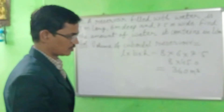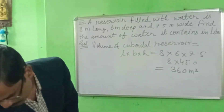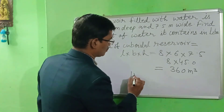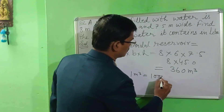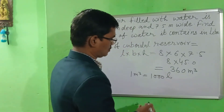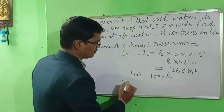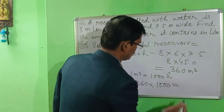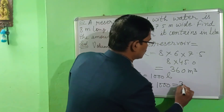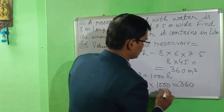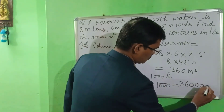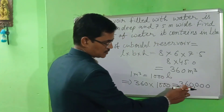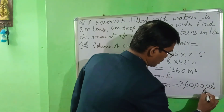To convert meter cube into liters, the formula is: 1 meter cube equals 1000 liters. So to convert 360 meter cube, you multiply 360 by 1000. That gives you 360,000 liters — that is, 3 lakh 60 thousand liters. That will be your answer.